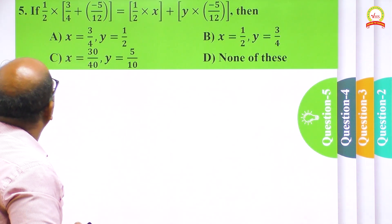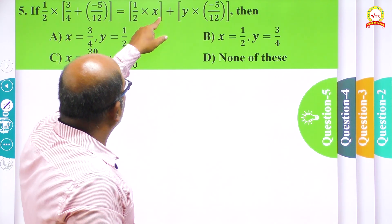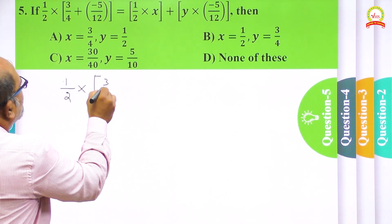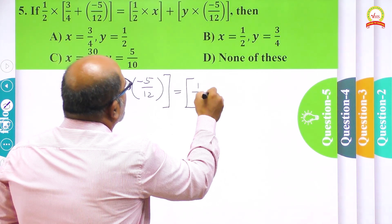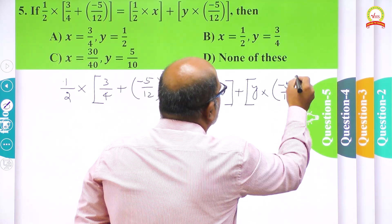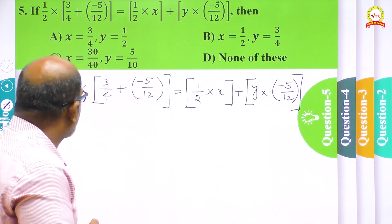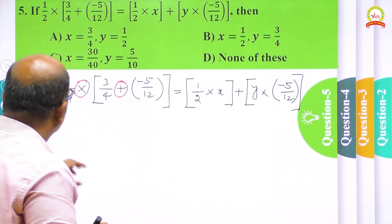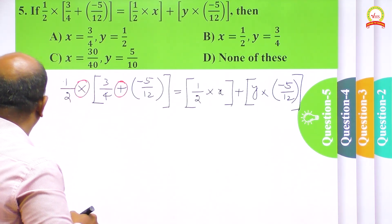We are going to the last question of this session. One equation is given. We can see that we do not know the value of x and y in the equation as given in the question: 1/2 multiplied by (3/4 plus minus 5/12) equals 1/2 into x plus y multiplied by minus 5/12. When I look at this expression, I can see that it must be the distributive property of multiplication over addition, because we have a product distributed over addends.